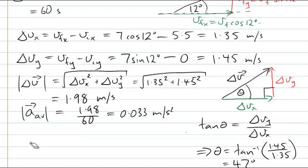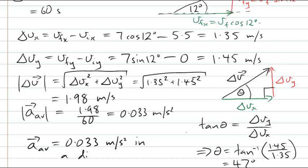So the final answer is that the average acceleration of the bicycle while being pushed by the wind is 0.033 metres per second squared, in a direction 47 degrees to the initial direction. And that's the final answer.